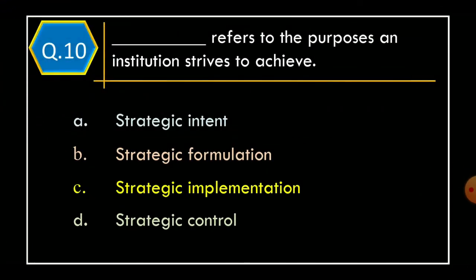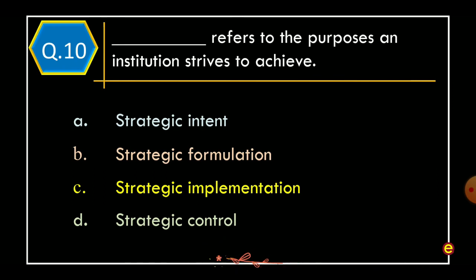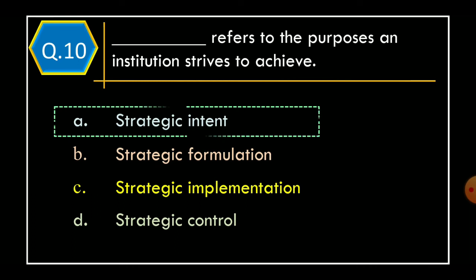Question 10. Blank refers to the purposes an institution strives to achieve. Option A: Strategic intent. Option B: Strategic formulation. Option C: Strategic implementation. Option D: Strategic control. The correct option is Option A: Strategic intent.